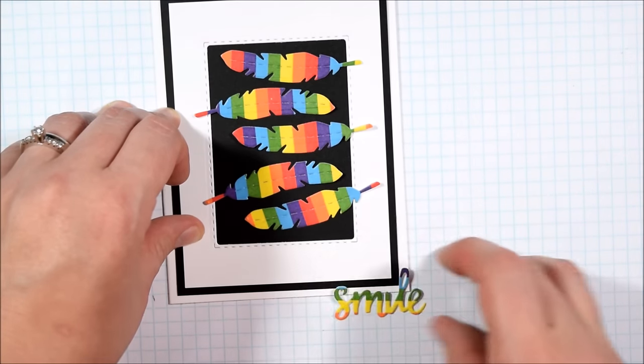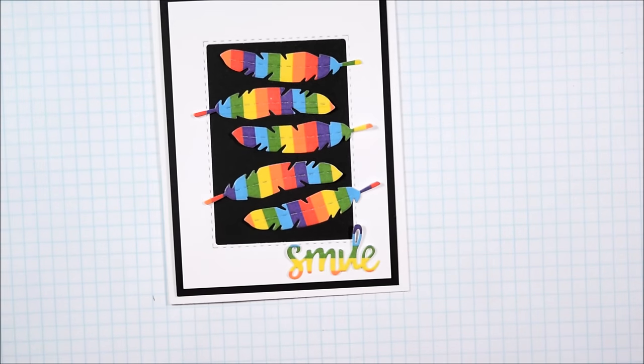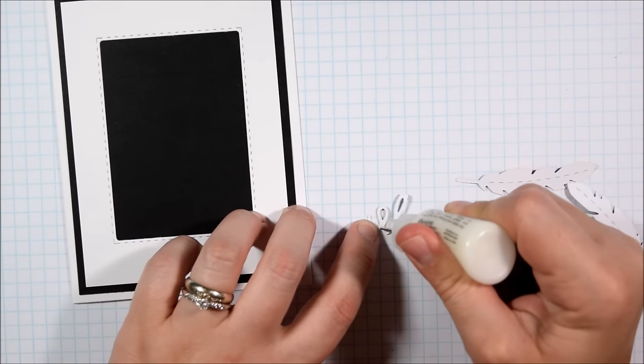In retrospect I might have wanted to make my smile a full rainbow as well since you can't see every color of the rainbow on the smile, and having a large chunk of it in the yellow did make it a little bit more difficult to read.